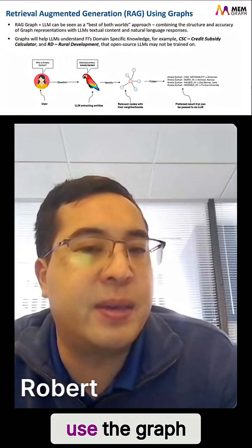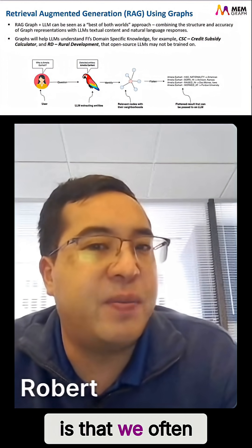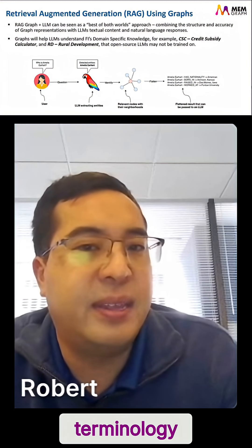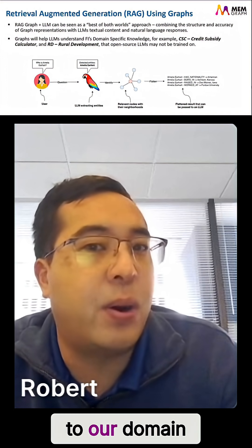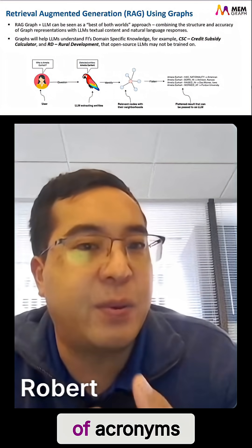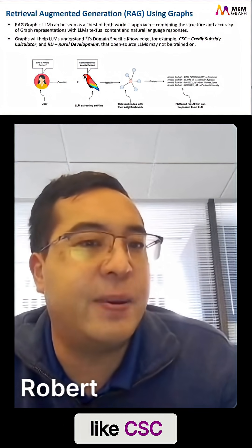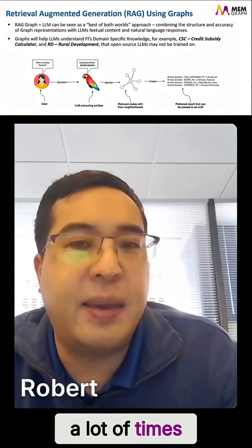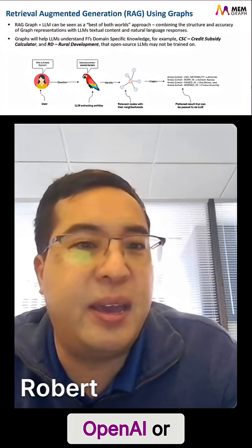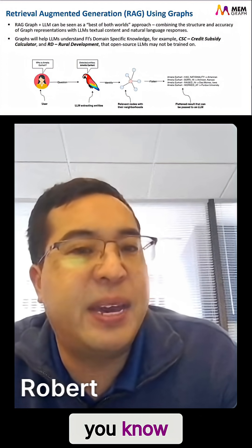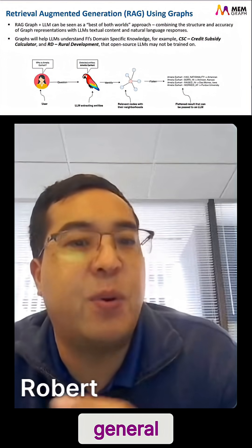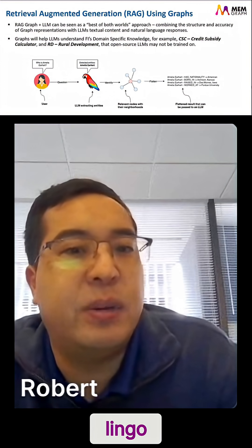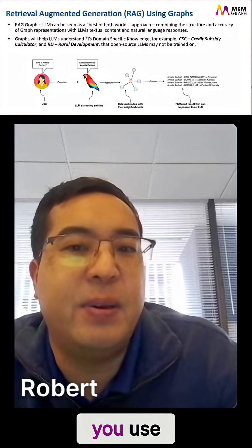Another reason why we use the graph database is that we often have our own language and our own terminology that is specific to our domain. For example, we have a lot of acronyms, like CSC — the credit subsidy calculator. A lot of times, OpenAI or DeepSeek, because they're trained on the general corpus of knowledge, they're not going to know your specific lingo, your specific terminology that you use.